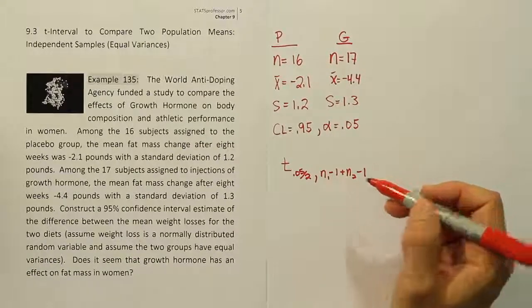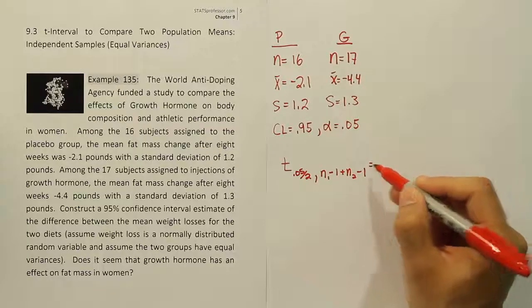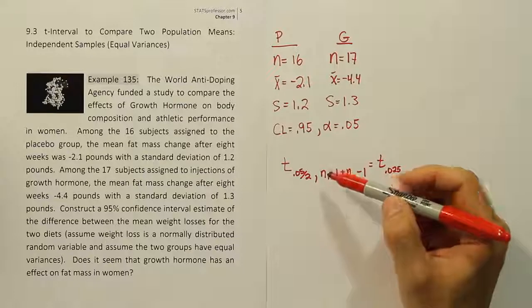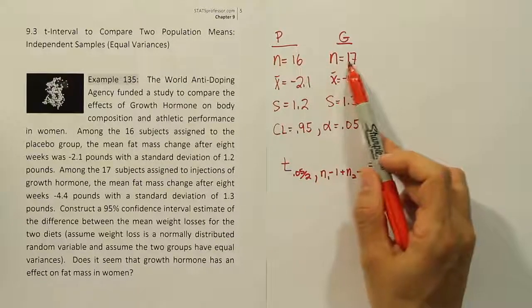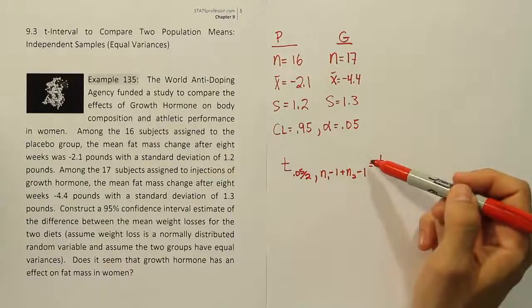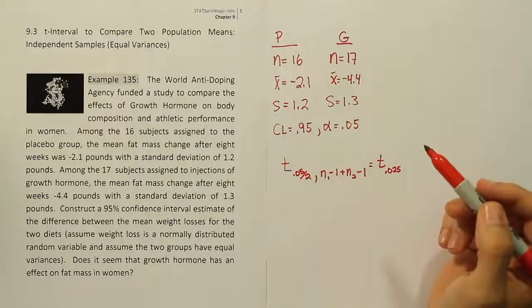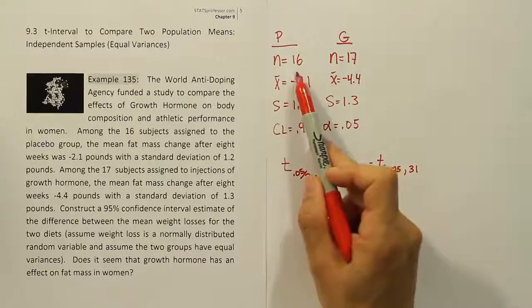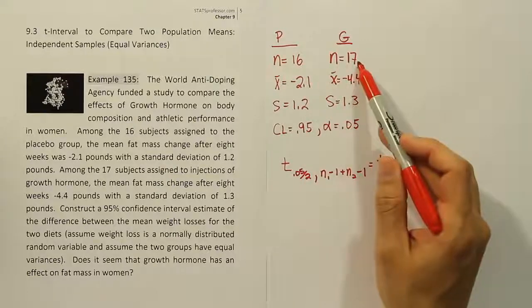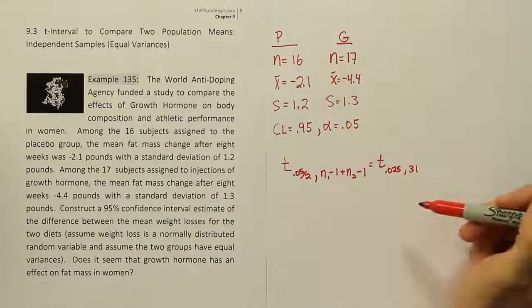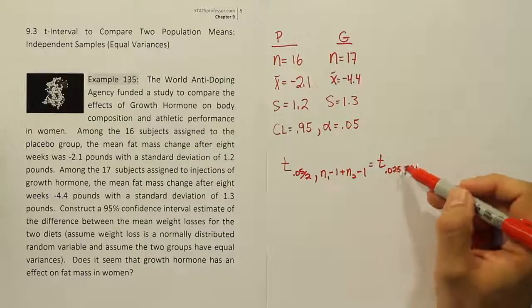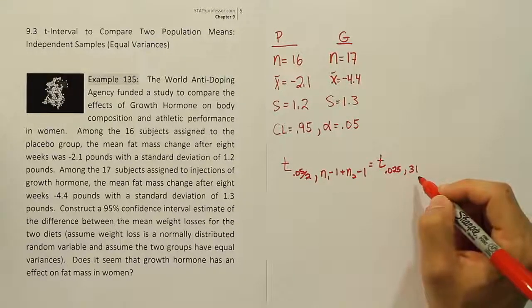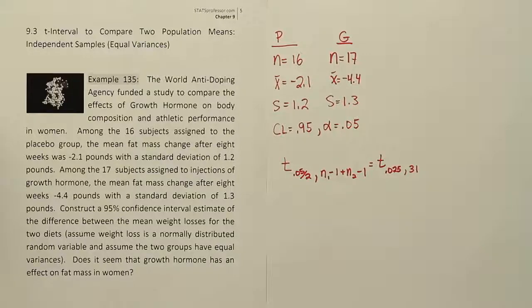So for our problem, what's that going to be then? Our critical value will actually technically be t.025 and then n1 is 16, n2 here is 17. If we take away 2 from that, it's going to be the same as adding 16 and 15, which is going to give you 31. So if you work that out for yourselves, n1 minus 1 is 15 plus 17 minus 1, which is 16. 15 and 16 make 31. So we have our degrees of freedom. We have our critical value's alpha level. So we're going to go to the table, look up 0.025 at one tail with 31 degrees of freedom.